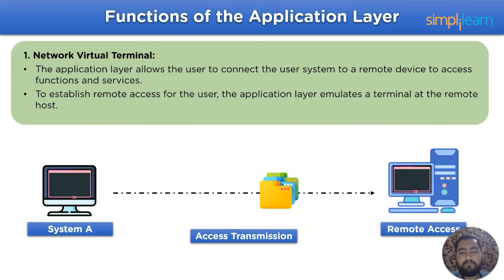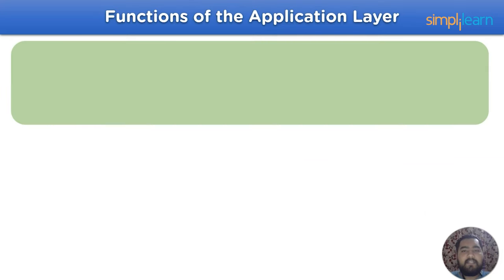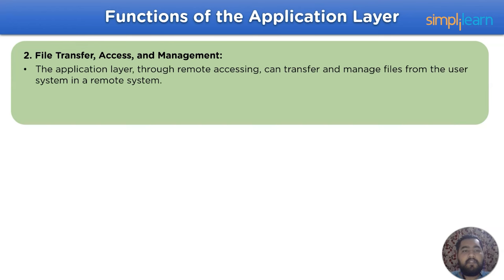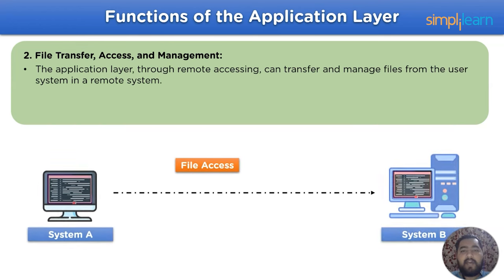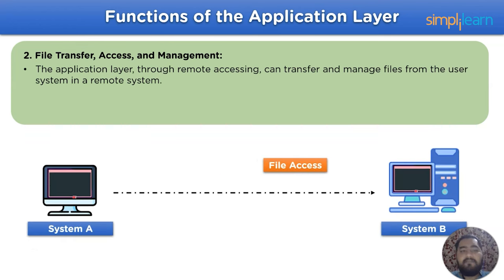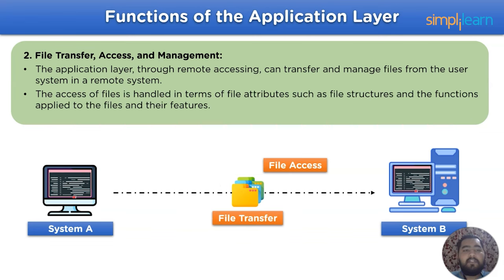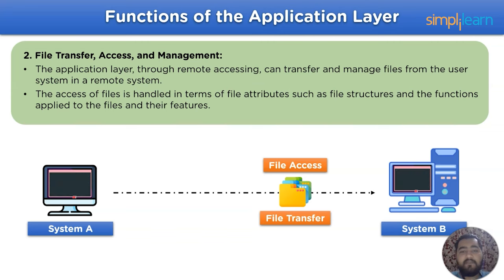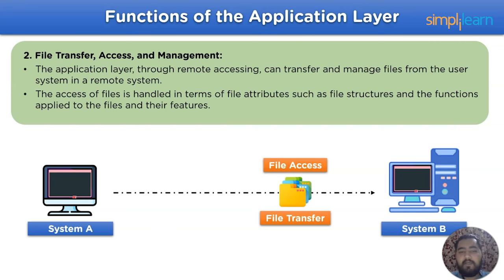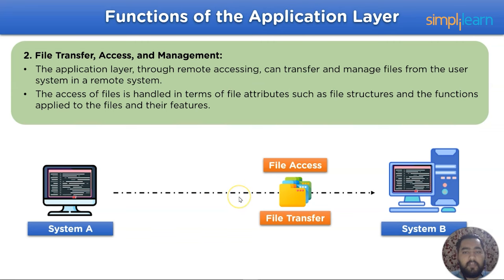The second function is file transfer access and management. Through remote accessing, the application layer can transfer and manage files for the user system on a remote device. File access is handled in terms of file attributes such as file structure, the functions applied to the files, and the features included in the file system over the network channel.